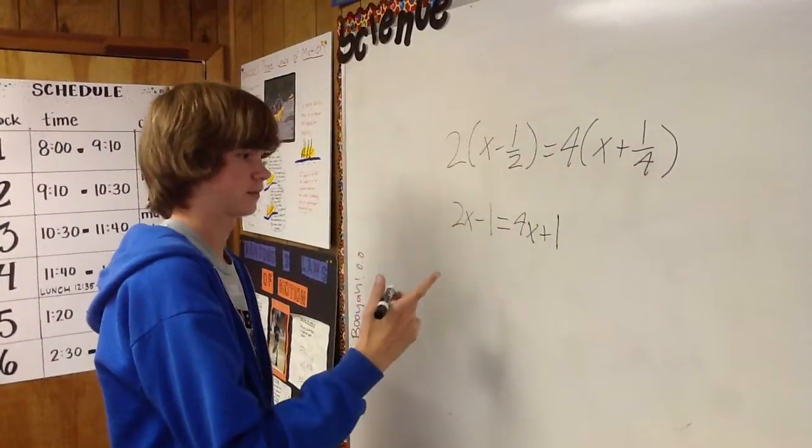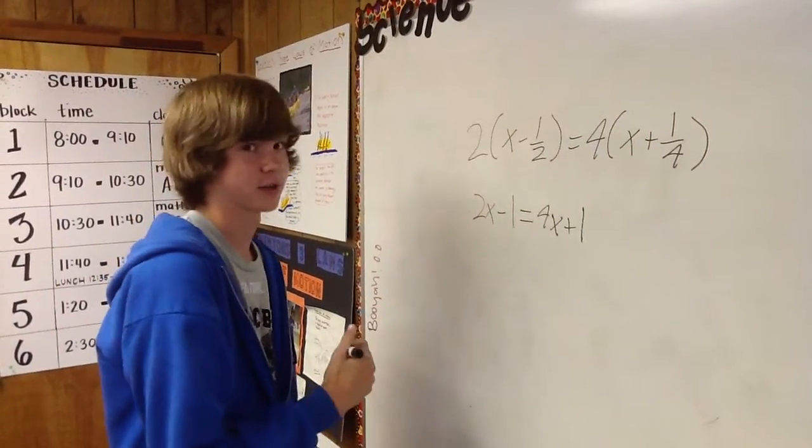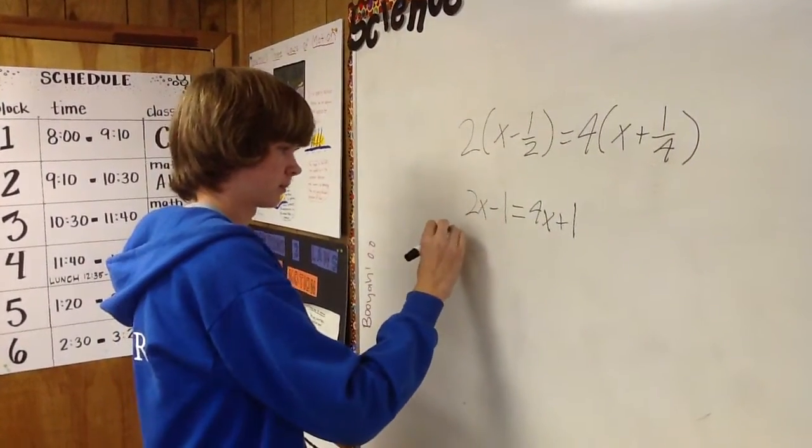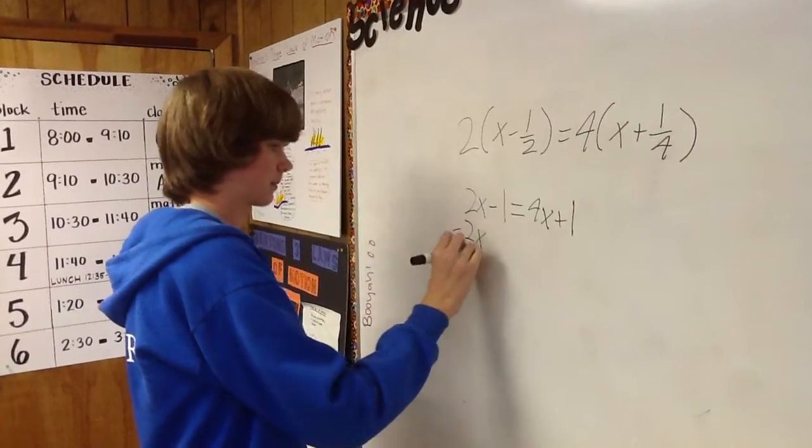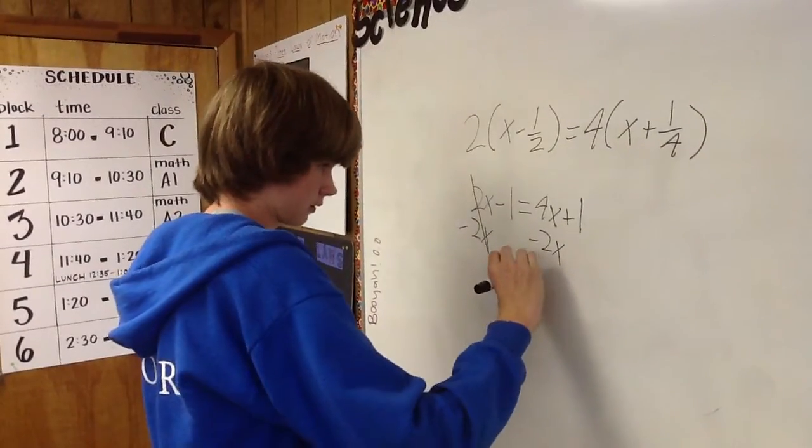Since the variables are on different sides, I need to get them to the same side, so I'm going to subtract this smaller one. So 2x minus 2x cancels out, and 4x minus 2x equals 2x.